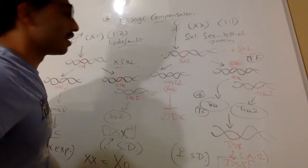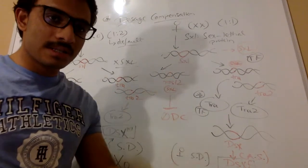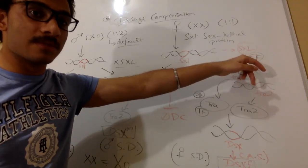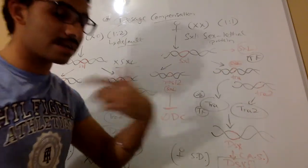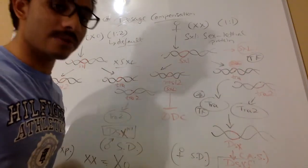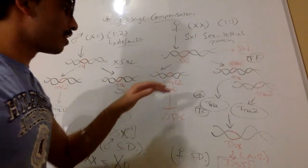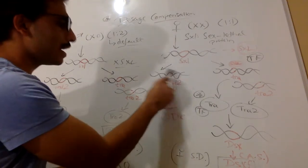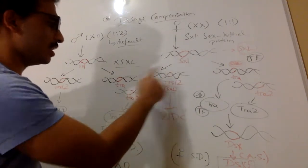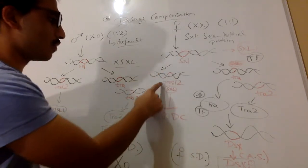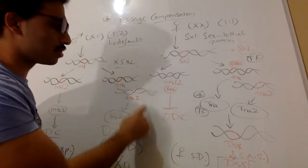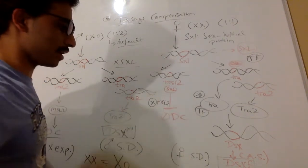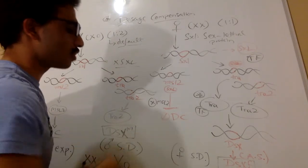On the other side, what SXL protein does is act as a positive transcription factor on the TRA gene, inducing its expression. But for MSL2, it is a negative mediator — the opposite. SXL protein will bind to the MSL2 gene and repress its expression, so we have no production of MSL2 protein in females. That's why we don't have any dosage compensation in females.